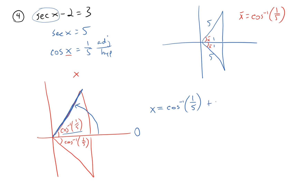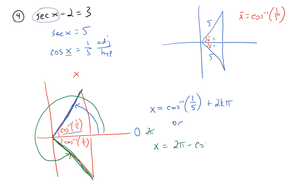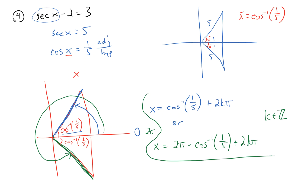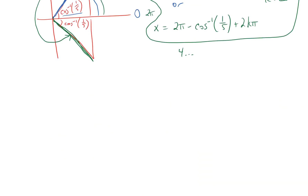Redrawing the picture and focusing on angles: rotating from 0 to the first terminal side gives x equals cosine inverse of 1/5 plus 2k pi. The other terminal side, just shy of 2pi, gives x equals 2pi minus cosine inverse of 1/5, plus 2k pi, where k is an integer. You can plug in k values for four specific solutions.